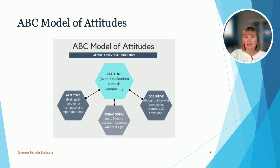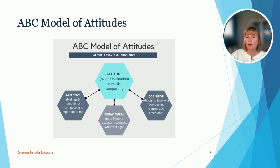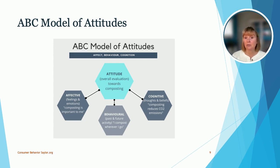Here we have a graph about the ABC model of attitudes. Overall, you have your attitude or overall evaluation — in this example, toward composting. Affective is our feelings and emotions: 'composting is important to me.' Behavioral includes past and future activity: 'I compost wherever I go.' Cognitive reflects our thoughts and beliefs: composting reduces CO2 emissions. The more that these three things are aligned, the stronger a consumer feels about a certain subject.